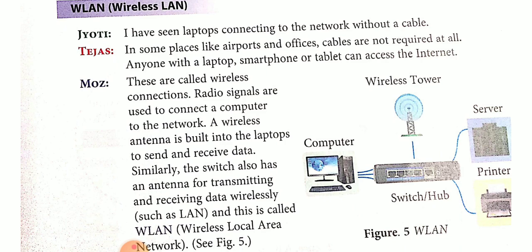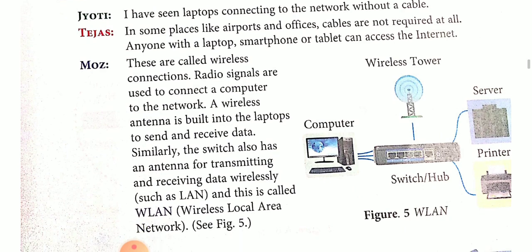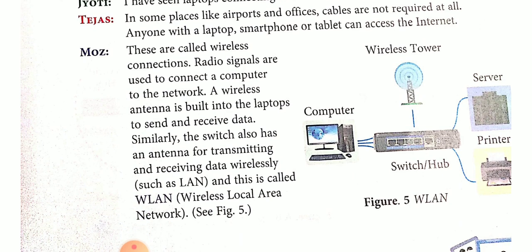Anyone with a laptop, smartphone, or tablet can access the internet. If you have a mobile phone, you can start your Wi-Fi using your phone. For example, if you are standing at the airport and want to open the airport network connection, we can start our phone Wi-Fi and connect to the airport Wi-Fi. This is called a wireless connection.